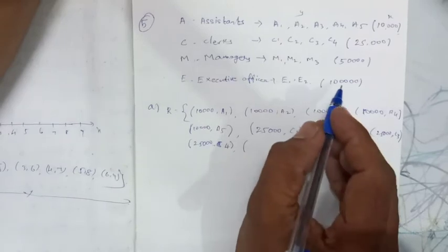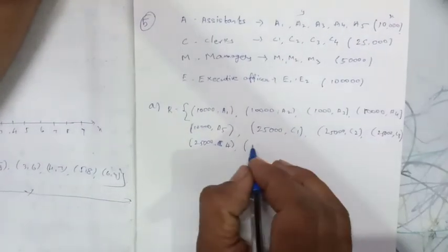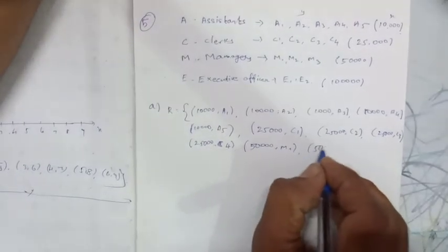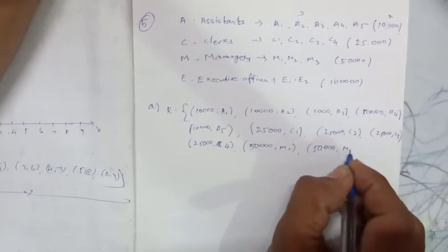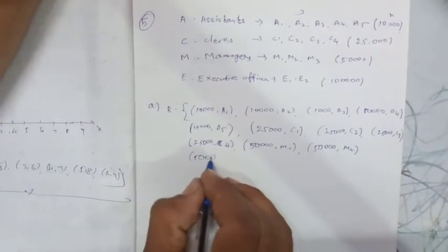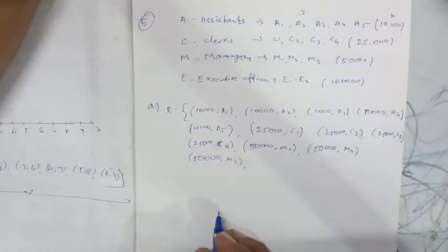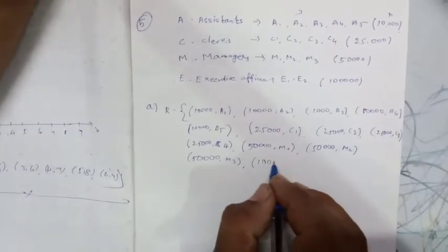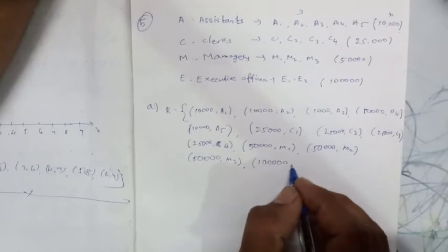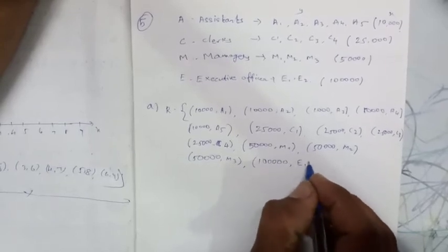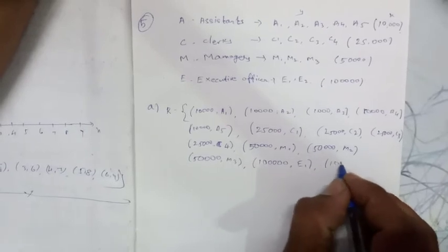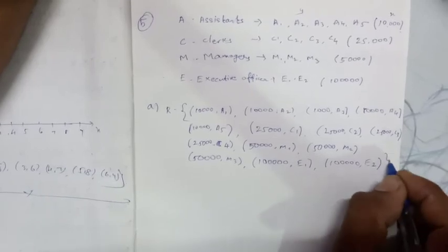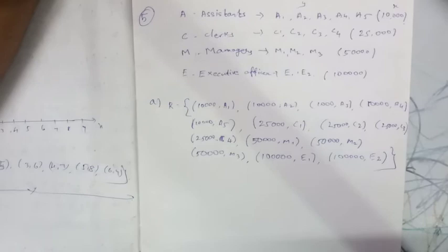Next category: salary 50,000 goes to managers — (50000, M1), (50000, M2), (50000, M3). Then the executive officers receive 1 lakh — (100000, E1), (100000, E2). So this completes the set of ordered pairs. The first question is done.